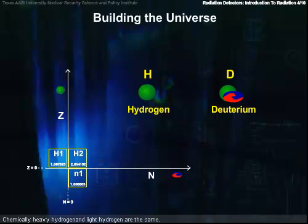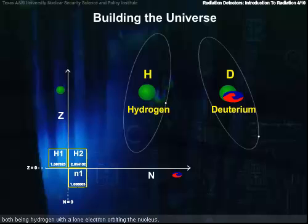Chemically, heavy hydrogen and light hydrogen are pretty much the same, both being hydrogen with a lone electron orbiting the nucleus. The nuclear properties of deuterium are very different from light hydrogen, however.